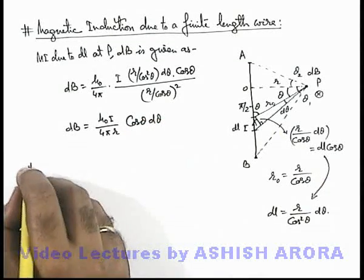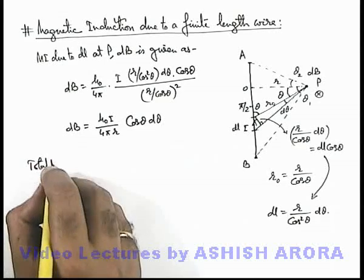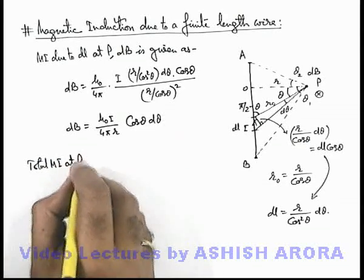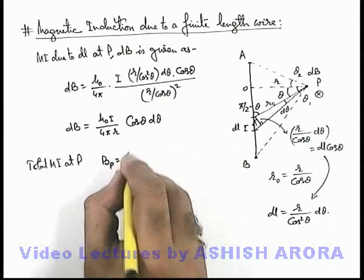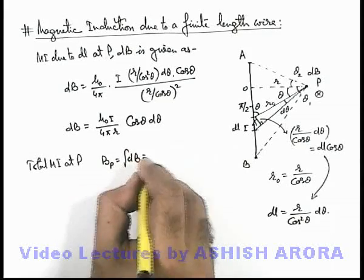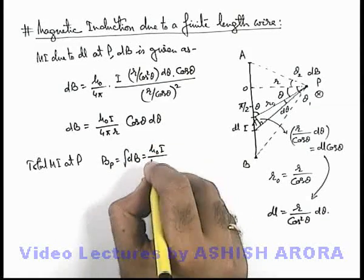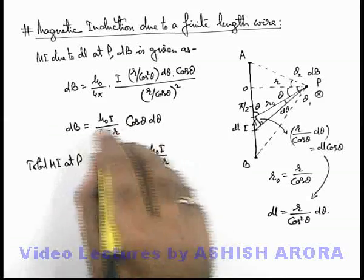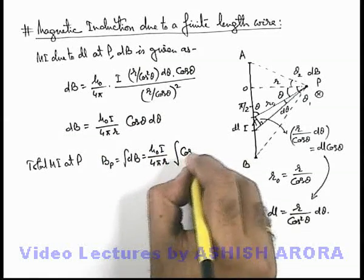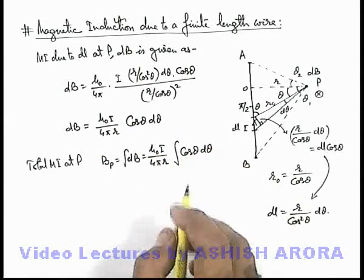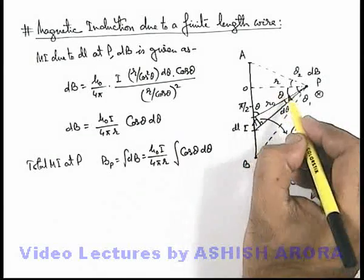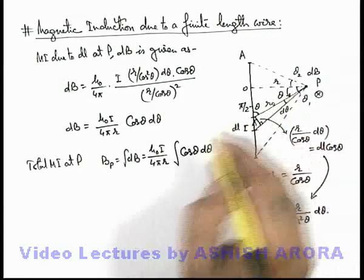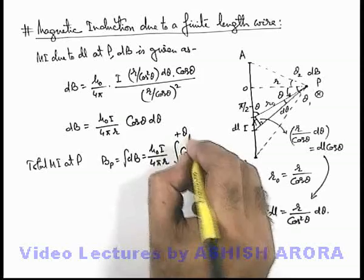Now for total magnetic induction at P, we can write B_P is the integration of dB, which is written as μ₀i by 4πr is a constant, I can take it out of the sign of integration, this cos theta d-theta. If we apply the limits, then limits will apply on theta, which will be from minus theta 2 to plus theta 1.